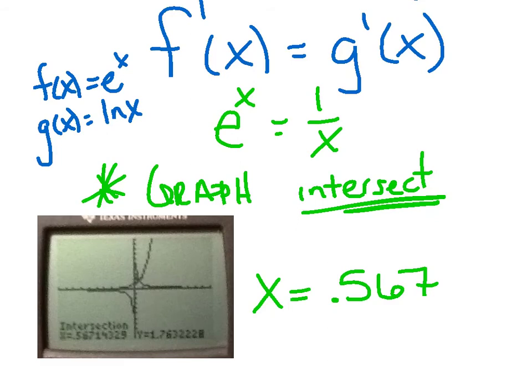I get a nice value of x = 0.567. And again, I just graph them, grab that intersection point on your calculator. Now, we're not done there. This is just a possible point.